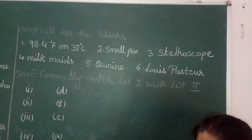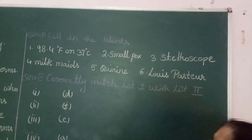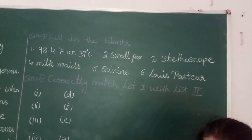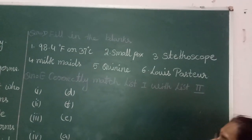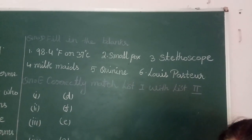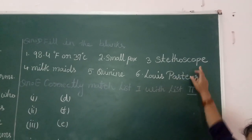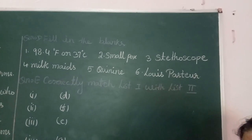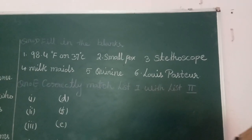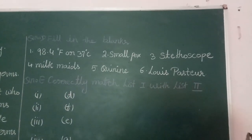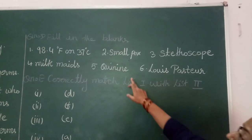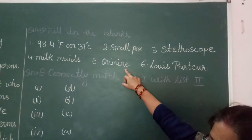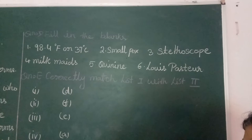Fill in the blanks. Number 1: The normal temperature of the body is 98.4°F. Number 2: Dr. Jenner developed the vaccination for smallpox. Number 3: The stethoscope is used for knowing about heart and lungs. Number 4: Cowpox was a common disease among the milkmaids. Number 5: Quinine helped in the treatment of malaria.